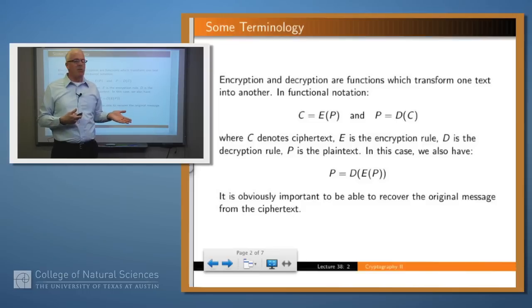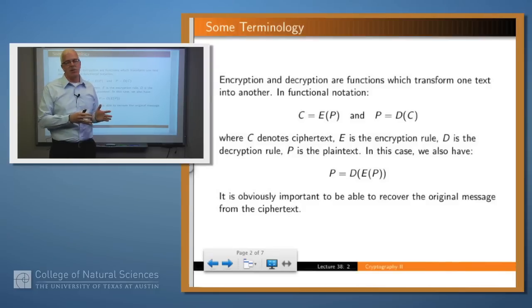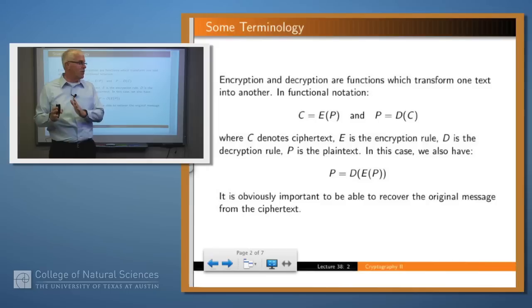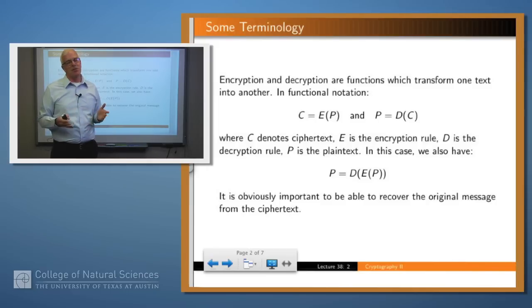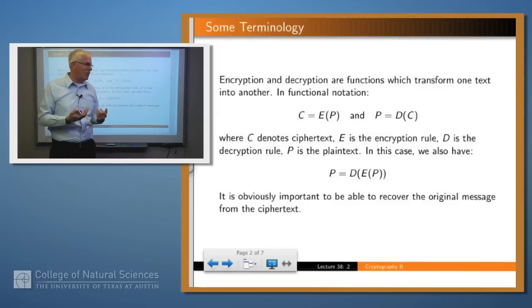The ciphertext is just the encryption algorithm — which is just a function — applied to the plaintext. Then the plaintext is extracted by applying the decryption algorithm to the ciphertext. It should be the case that decryption is the inverse of encryption, so we can get the original message back.